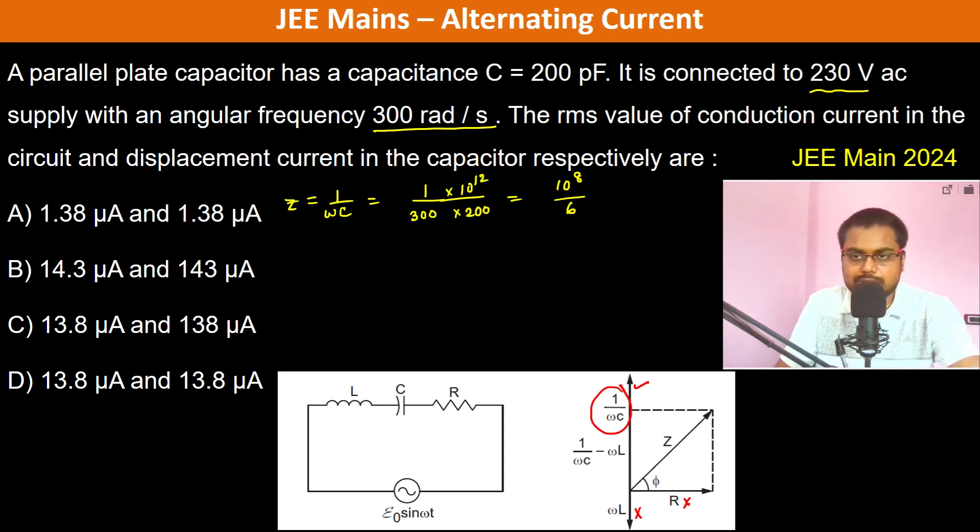Now we want to know the RMS value of the conduction current. Therefore the current is going to be 230 volts divided by 10^8/6, which is equal to...